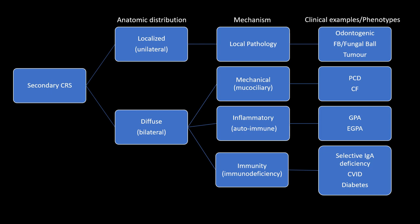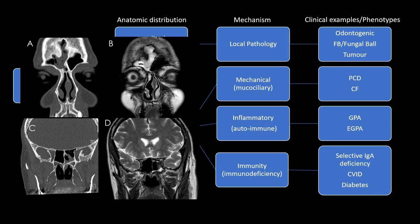The final secondary diffuse group is people with immunodeficiency — patients with selective IgA deficiency, common variable immune deficiency (CVID), and probably poorly-controlled diabetes. This lady with CVID would get recurrent infective problems in her sinuses — at one time it's in the right frontal and left sphenoid, then a different pattern the next time, resolving in between and flaring again. Getting someone like this right means acknowledging the secondary issues — just as in the mechanical and inflammatory groups — and managing the underlying CVID rather than just local treatments alone.